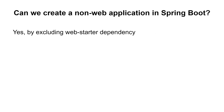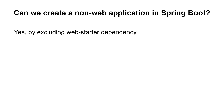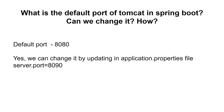Next, can we create a non-web application in Spring Boot? Yes, you can create a non-web application by excluding the web starter dependency. Then the question was: what is the default port of Tomcat in Spring Boot, and can we change it? The default port is 8080. Yes, you can change it by updating the application.properties file with the property server.port and specifying the port number on which your application should run.